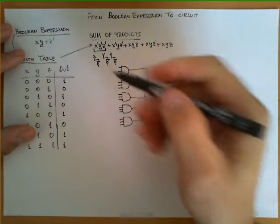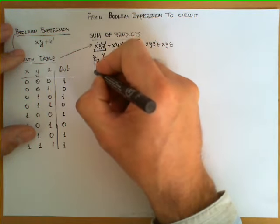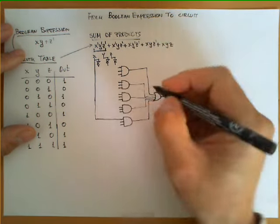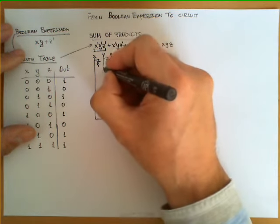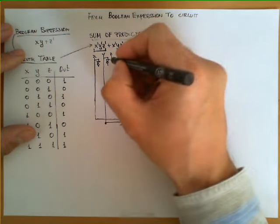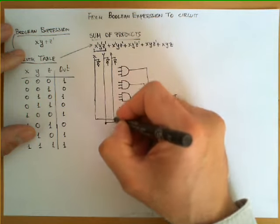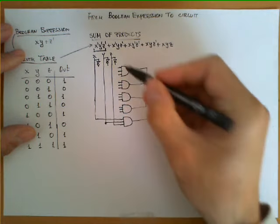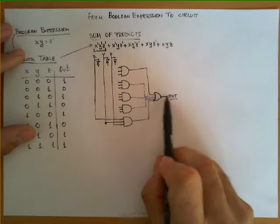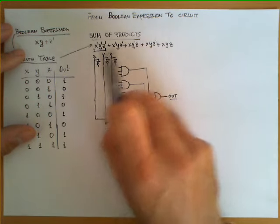So let's start from the last term and we know here that we have to connect x, y and z. So what we do is we take this first input x and connect it like this. The second one will be y so we connect it like this and the third one will be z and we connect it like this. So with these three connections we have replicated this product which itself is feeding into this overall sum.